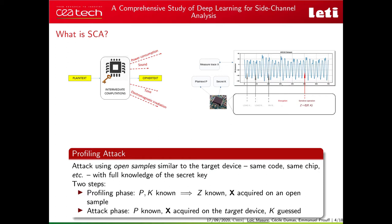More precisely, we consider profiling attacks where the attacker has access to an open sample similar to the target device with full knowledge of the secret key. The profiling attack is decomposed in two steps. In the profiling phase, the attacker knows the secret key and characterizes the behavior of a measured trace X depending on the sensitive intermediate variable Z. Then during the attack phase, the key remains unknown and must be inferred using attack traces on the real target device.